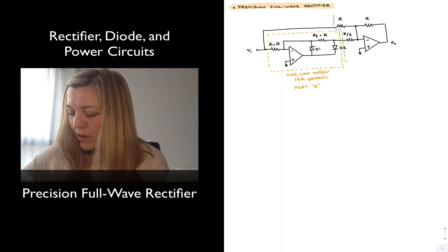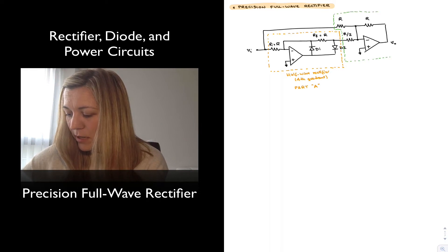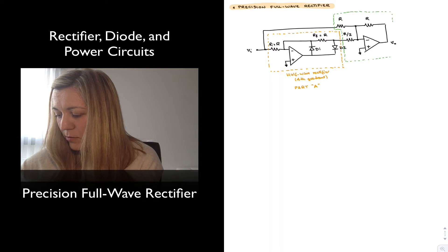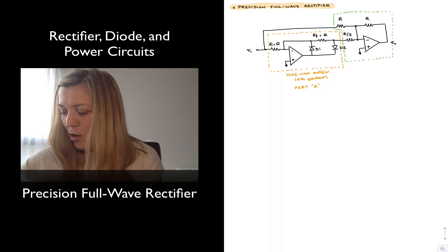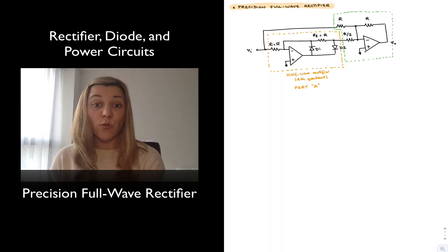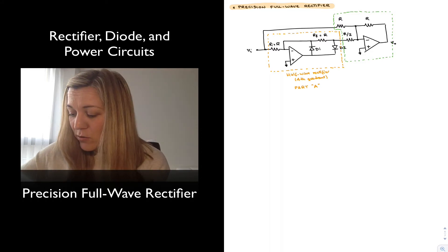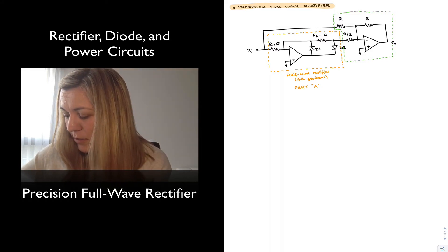And the second part or part B is going to be a circuit over here, which we should identify as an inverting summing amplifier. We have two input signals, which are being applied on the inverting input terminal. And the output should be equal to the weighted sum of those two input signals. One of those input signals is VIN.